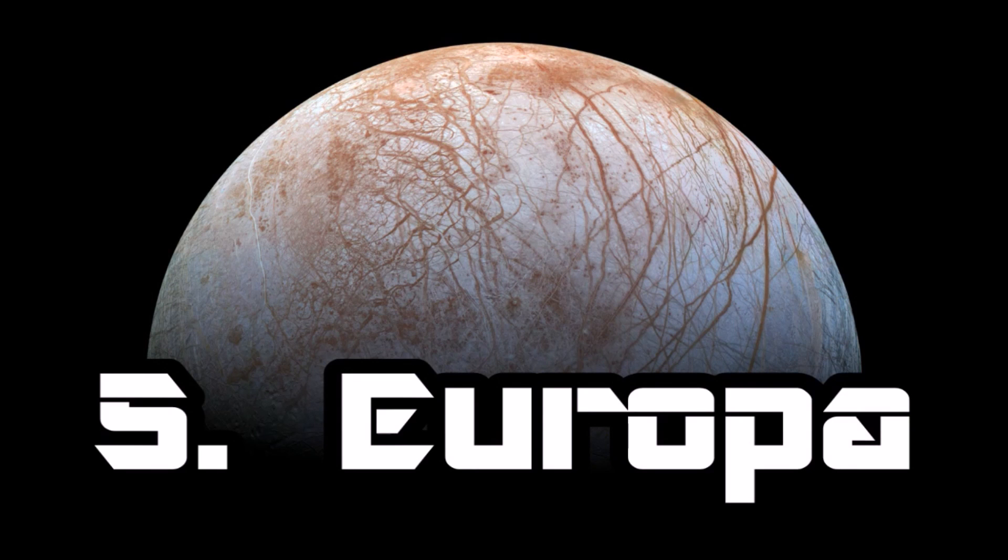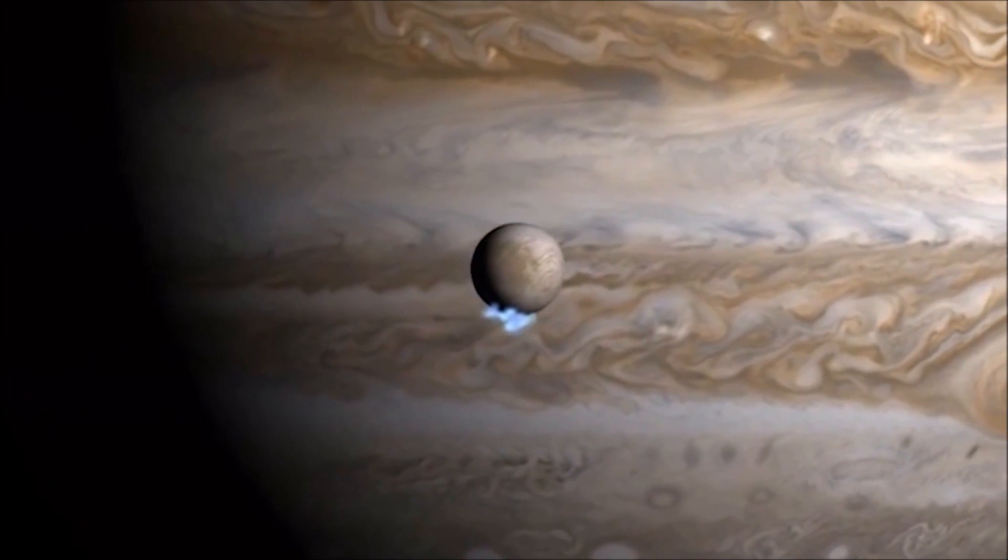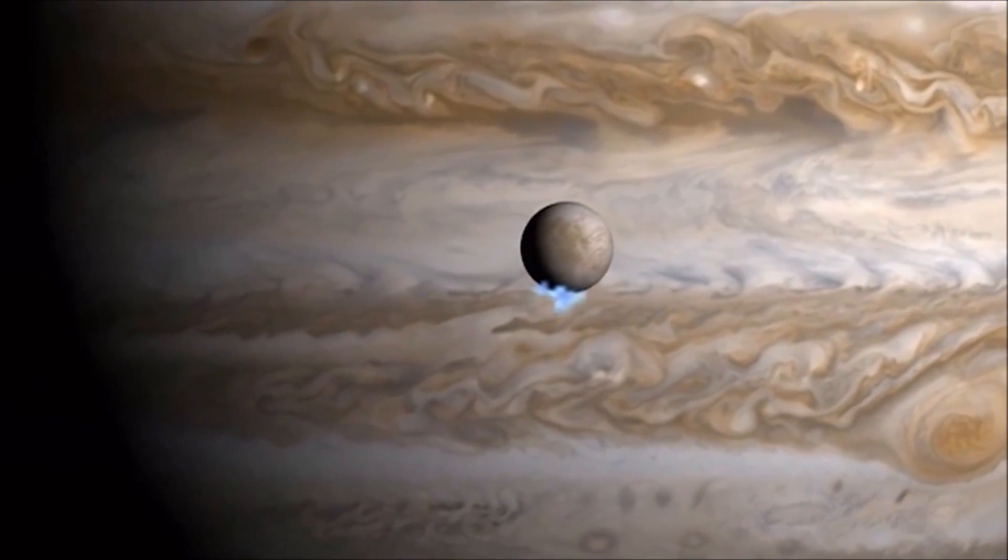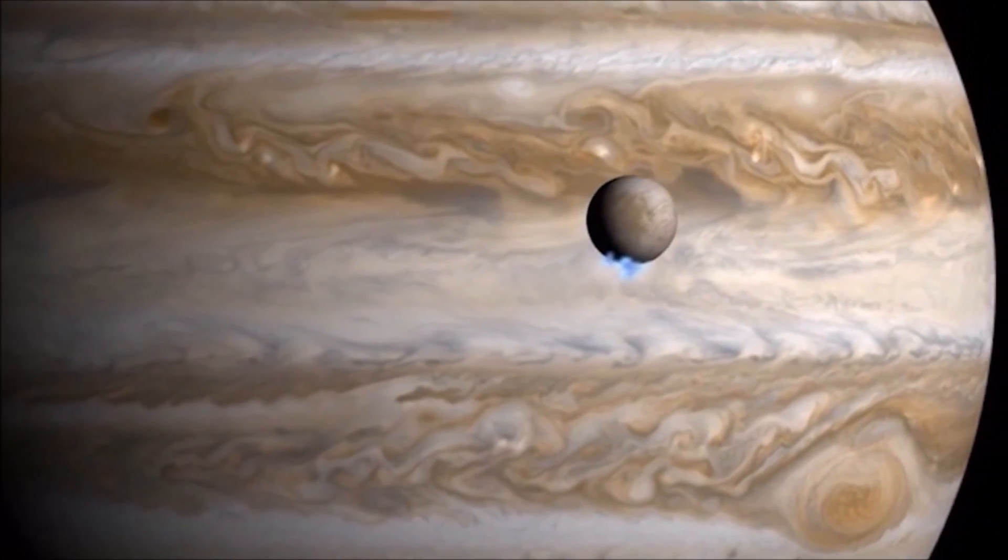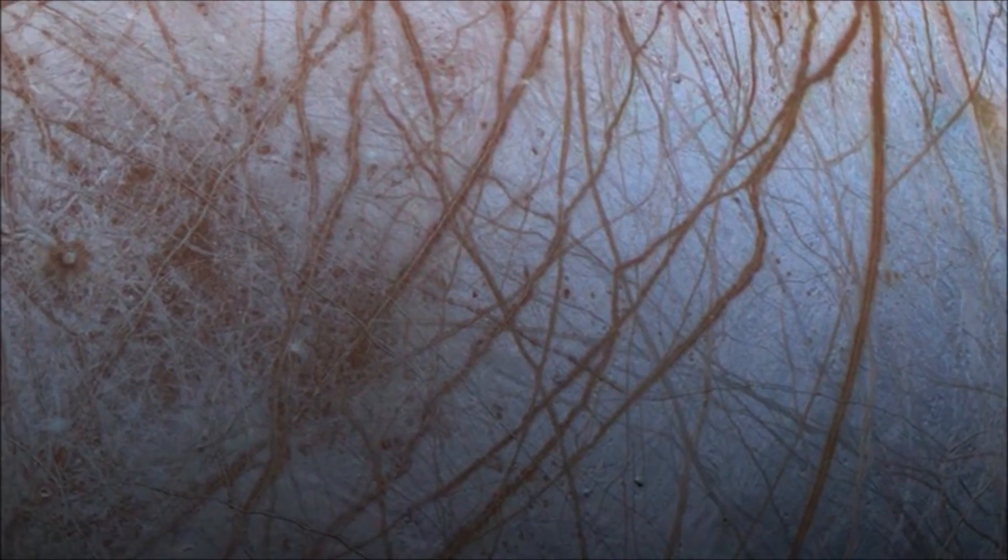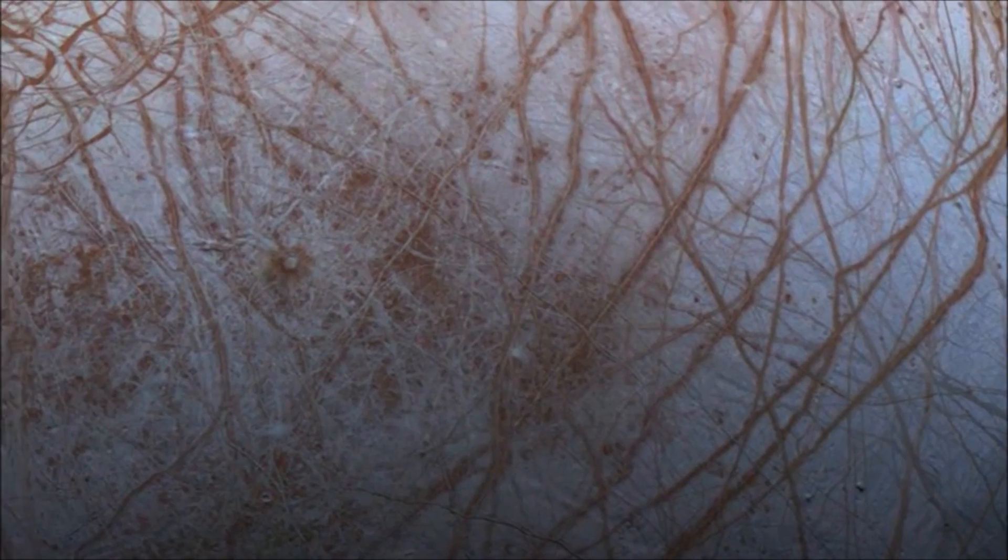Number five: Europa. Europa is arguably the most mysterious of Jupiter's 53 moons, and it is probably our best chance of finding alien life within our own solar system. To see what makes Europa such a promising candidate for life, we have to look at what lies beneath its icy surface.